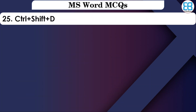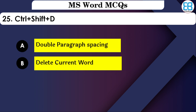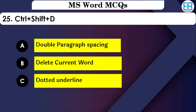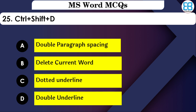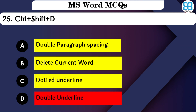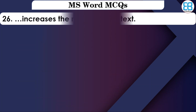What is the shortcut for double underline? The shortcut for double underline is Ctrl+Shift+D.